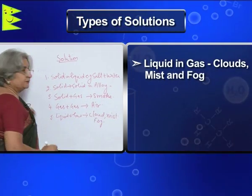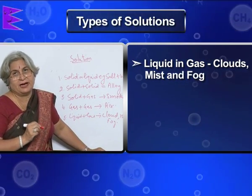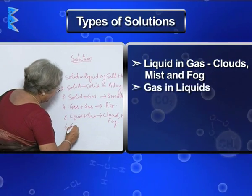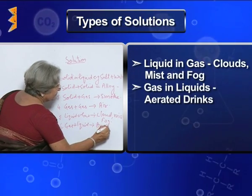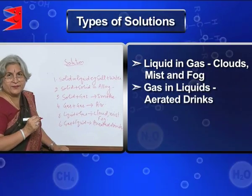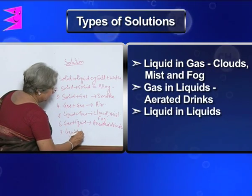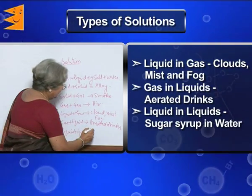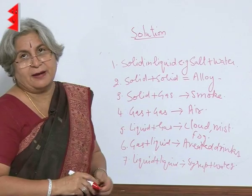Mist and fog are also examples. The basic idea is that a solution is not only liquid and solid — there can also be two liquids. Then there is gas in liquid, like aerated drinks where carbon dioxide is dissolved in water. And there can be liquid and liquid as well.